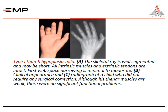Type one thumb hypoplasia: as shown in the photo and X-ray, the skeletal structure is well segmented and may be short. All intrinsic and extrinsic muscles are intact, and the first web space narrowing is minimal to moderate.